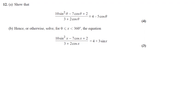So for question 12, year 12, we have got to show that this is identical to this here. We're going to start with the left hand side and manipulate it until we end up with what's on the right hand side, which is 4 minus 5 cos theta.